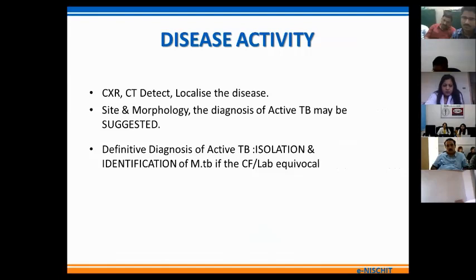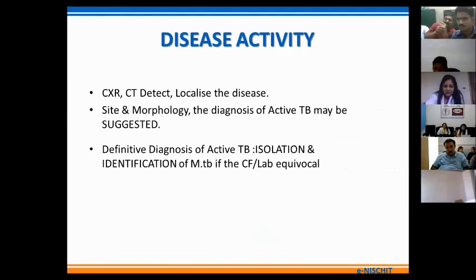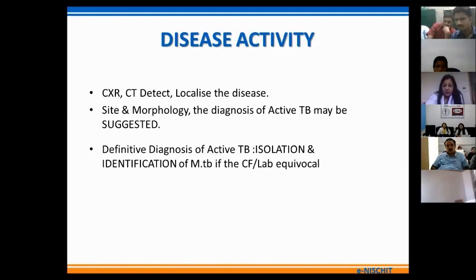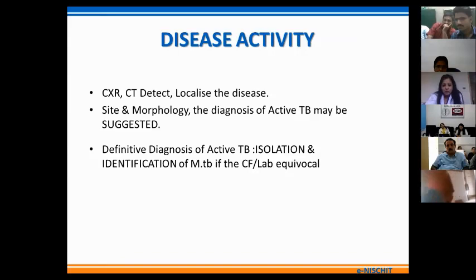After reviewing radiological manifestations of primary and post-primary disease, we come to the most important question: assessing disease activity. Chest X-ray and CT serve to detect and localize disease, and based on the site and morphology of radiological findings a diagnosis of active TB may be suggested. But for a definitive diagnosis of active TB, it still requires the isolation and identification of mycobacterium, especially if clinical findings and lab parameters are equivocal.